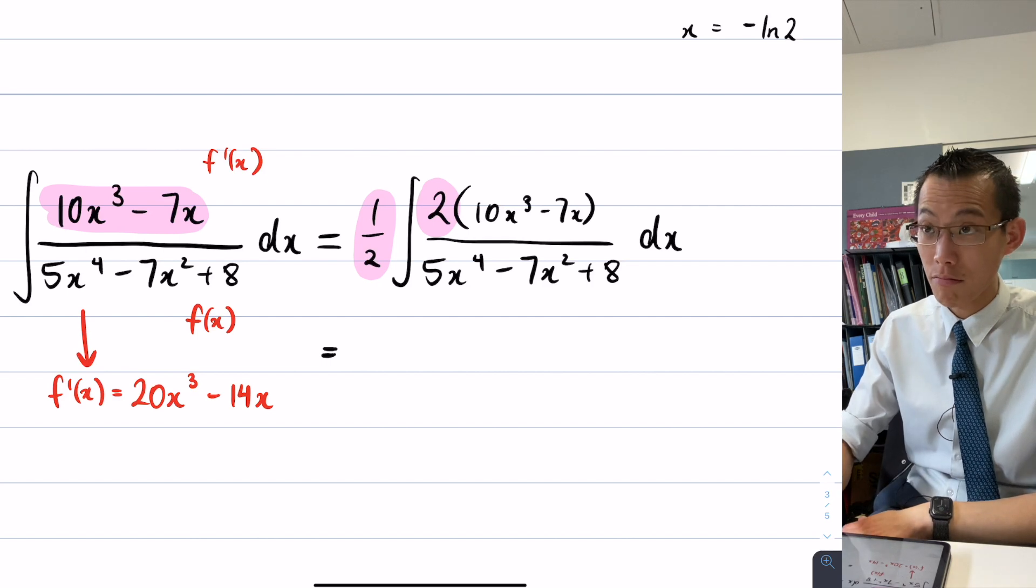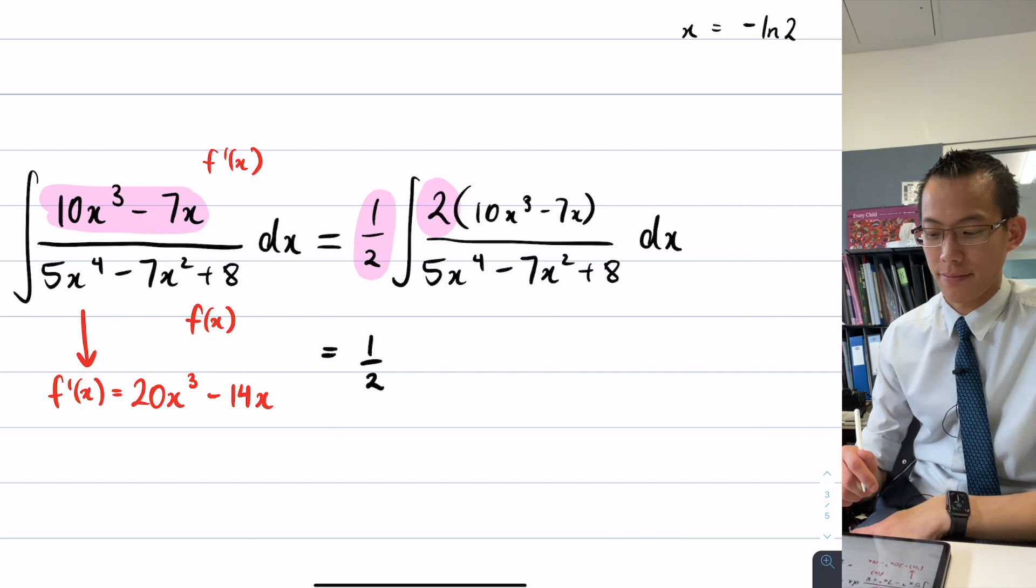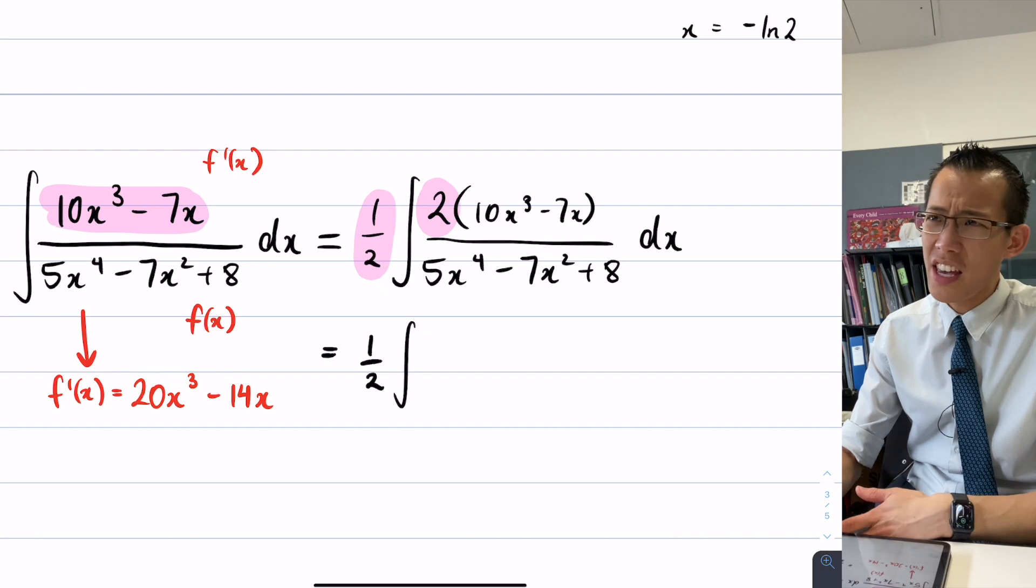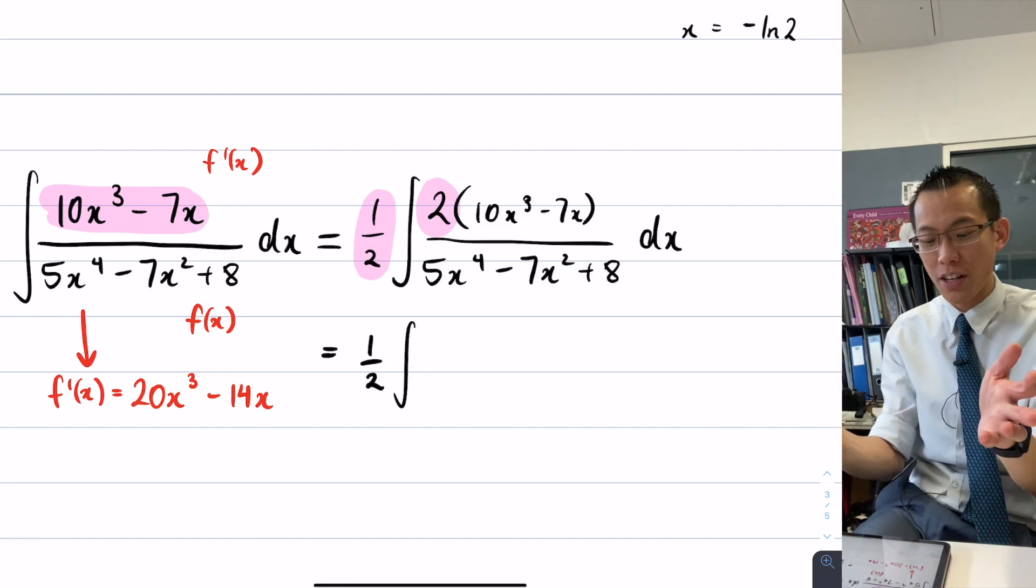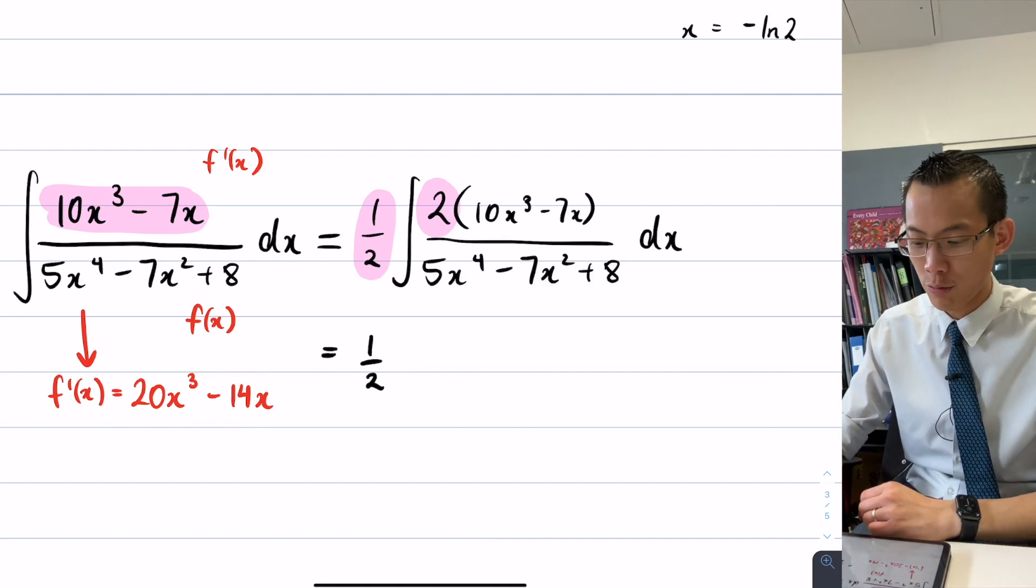You still have the same thing. I just described it more. Now I'm ready to go. So that half hanging out the front, it's just hanging out the front, and now what? You expand the top, which is just going to be the derivative of the bottom, so you don't really have to do that. You already know it's going to be the 20x cubed minus 14x.